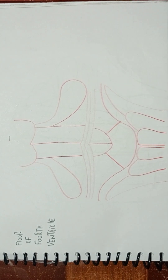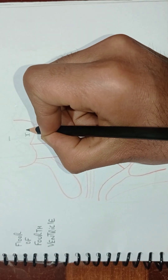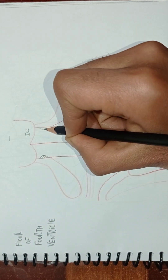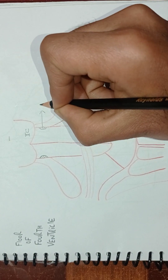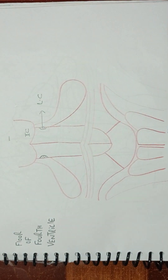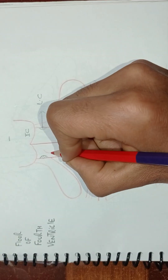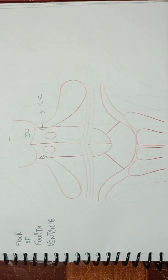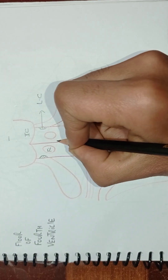Now, we will label this diagram — the floor of the fourth ventricle. This is the inferior colliculus. These two points here are the locus ceruleus. The two circular structures, these circles here, are the facial colliculus.